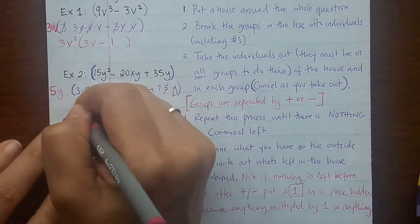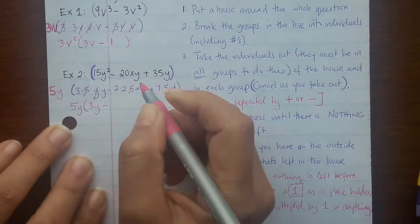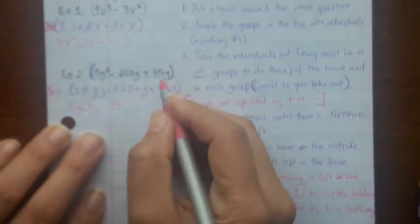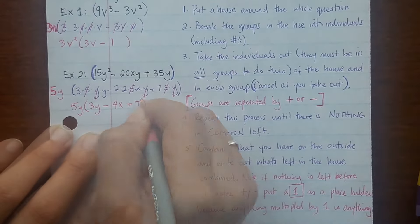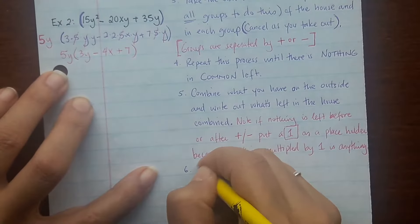Alright, then combine what you have on the outside and write what's left on the inside combined. So I have 5y on the outside. Inside I have 3y, then have 4xy plus 7y.